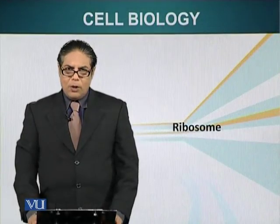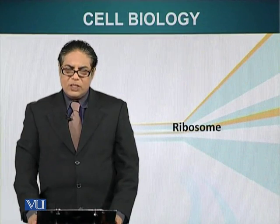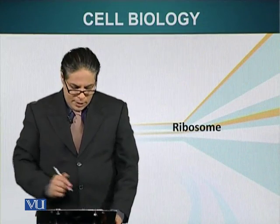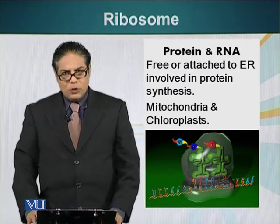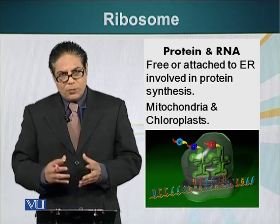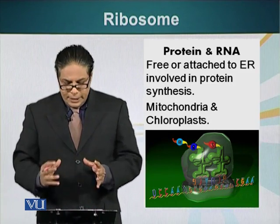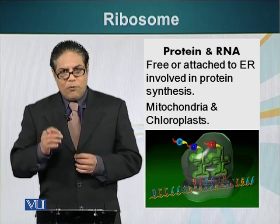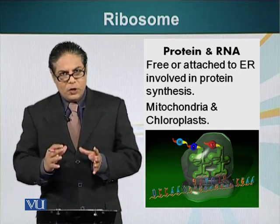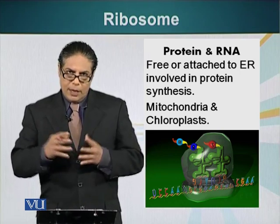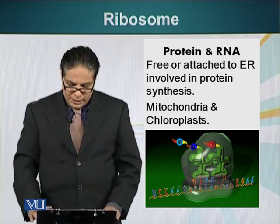In this module, we will talk about a special type of organelle which does not have a membrane around it: the ribosome. Ribosomes are made up of two subunits, the large subunit and the small subunit. These organelles are basically responsible for translating the language of nucleotides into the language of proteins or amino acids.